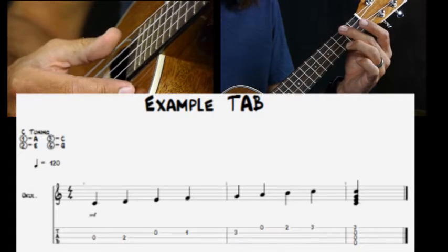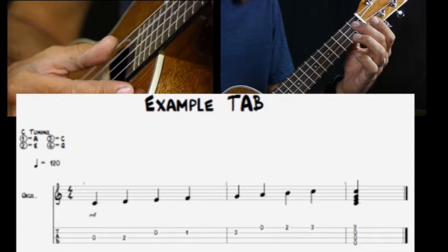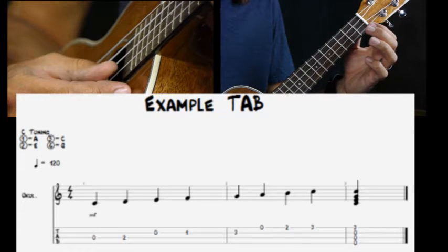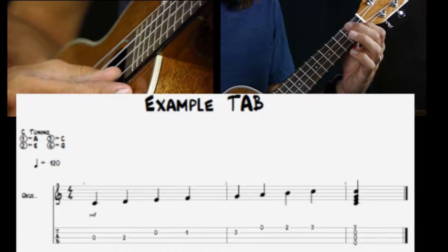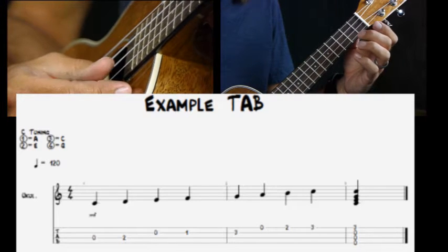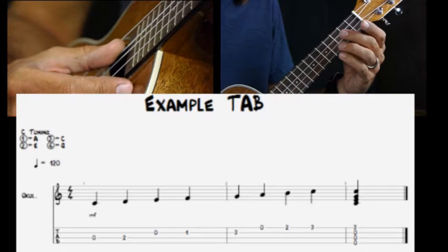Pretty simple. Zero on the C string. Two. Zero on the E string. A one. A three. A zero on the A string. Two. And a three. What we've just played is a C major scale.